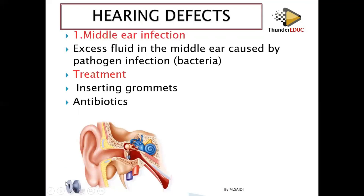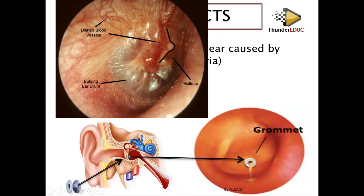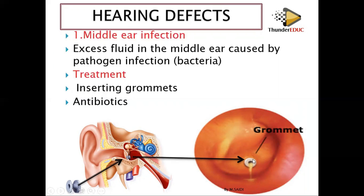When you magnify, this is the tympanic membrane, and this is the grommet. Once inserted, the fluid starts to come out through the tympanic membrane and you are able to drain it out, then your ear will become fine again.